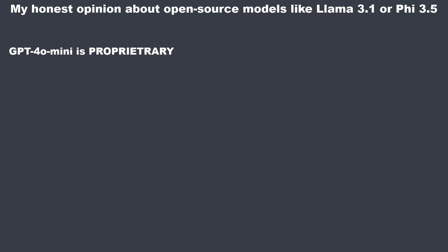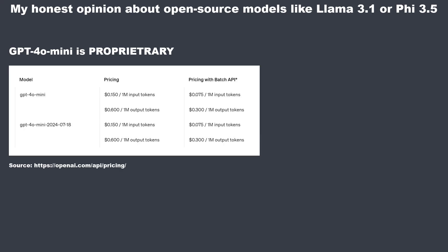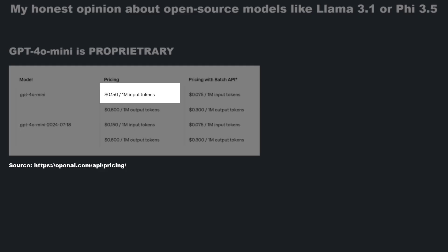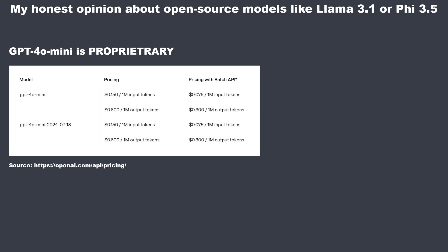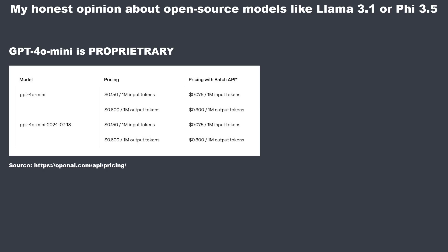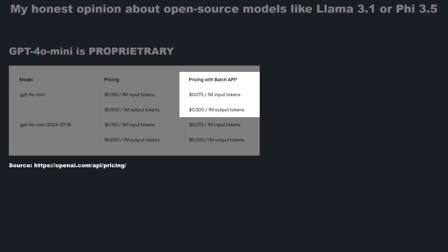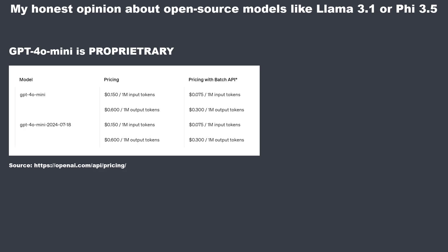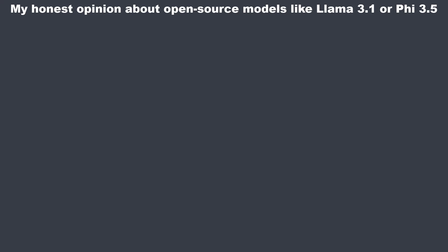GPT-4.0 mini is not free. It costs 15 cents for 1 million input tokens and 60 cents for 1 million output tokens. If you use the batch API, it's only half the price. So now let's make a side-by-side comparison of the three models.